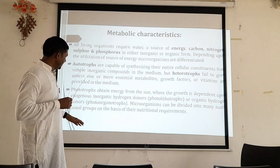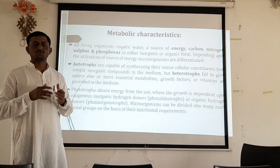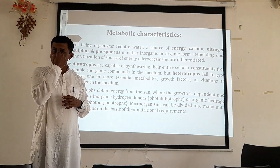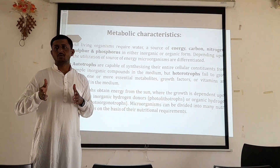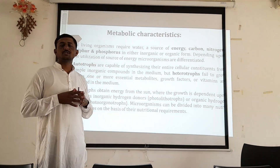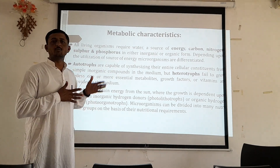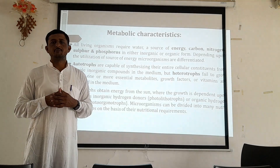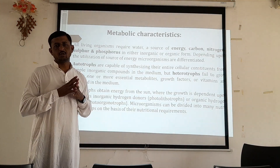Microorganisms can be divided into many nutritional groups on the basis of their nutritional requirements — phototrophs, lithotrophs, chemo-organotrophs, and chemo-lithotrophs. These are the classifications of organisms based on their metabolic processes. Both immunological characteristics and metabolic properties are helpful for the proper classification and identification of organisms with respect to their metabolic processes.